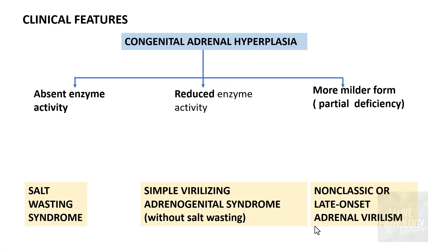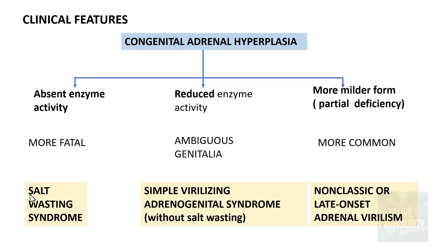To summarize the clinical features: the salt wasting syndrome is the most fatal form among the three. The non-classic or late-onset type is the most common one, whereas the simple virilizing androgenital syndrome is the one that most often manifests with ambiguous genitalia.